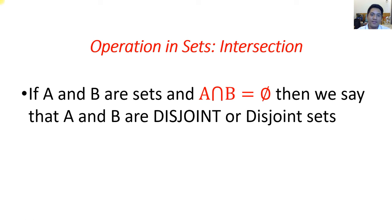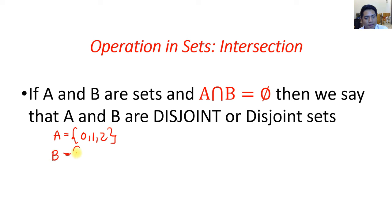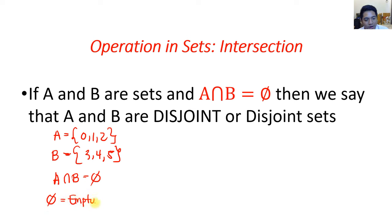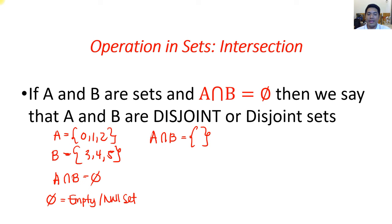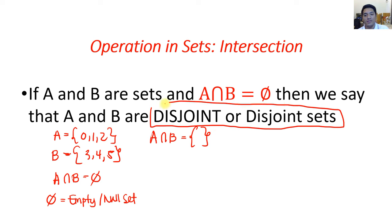If A and B are sets and their intersection equals the empty set — for example, A = {0, 1, 2} and B = {3, 4, 5} — there is no common element between the two sets. The intersection is the null set, and in this case the sets are called disjoint or disjoint sets.